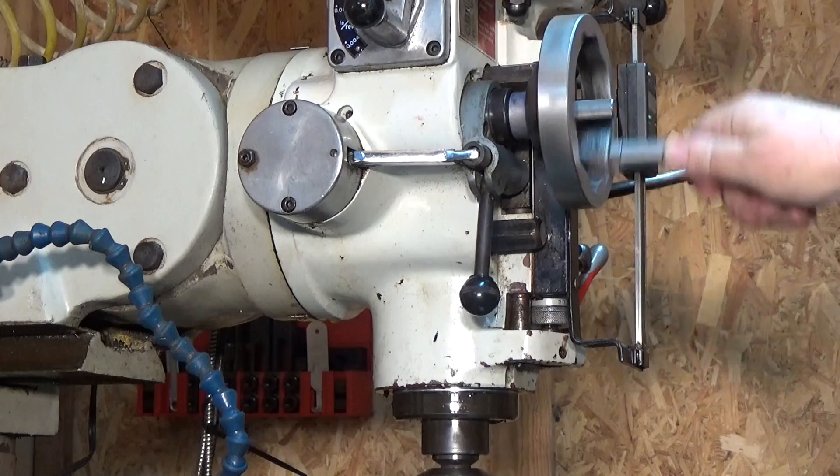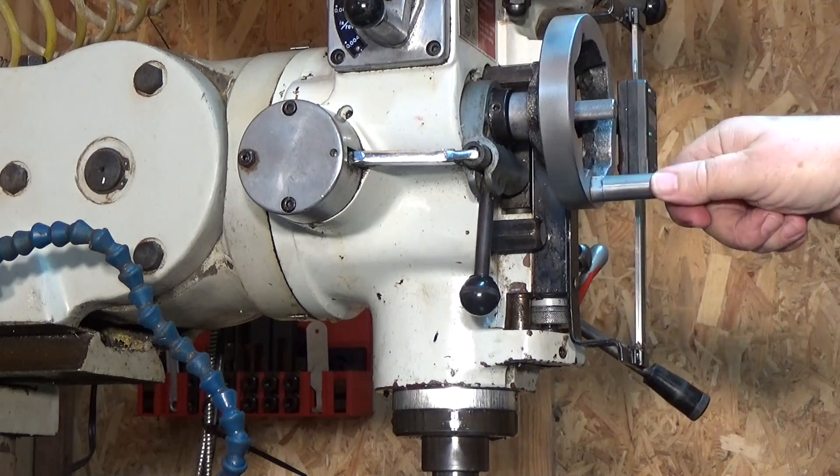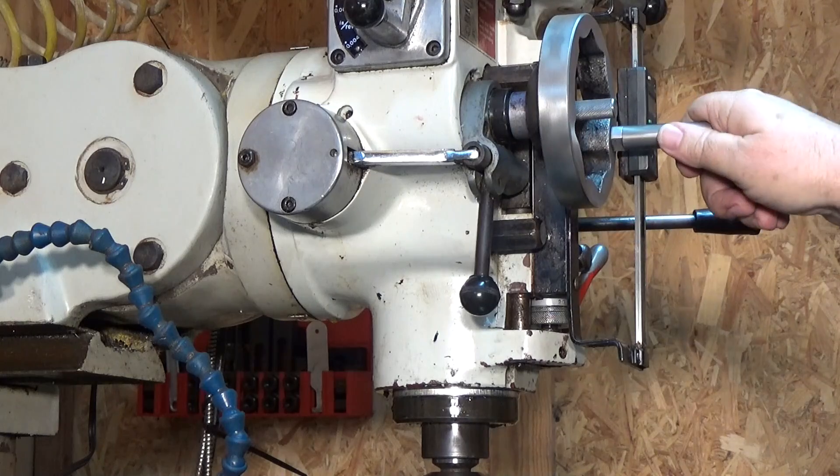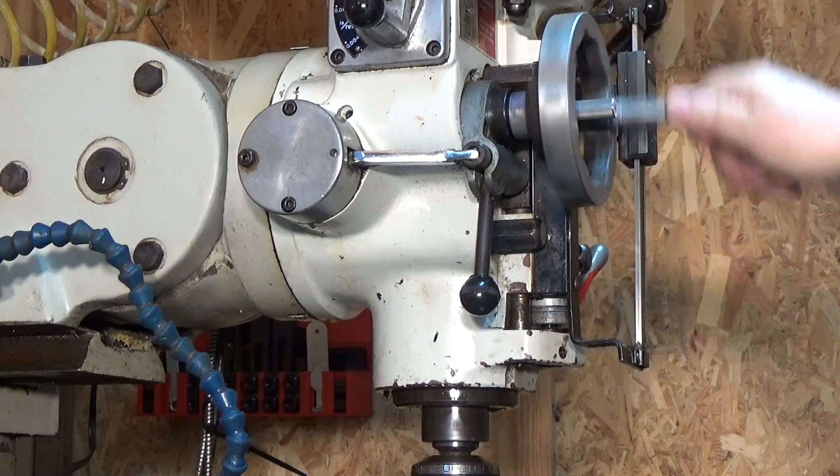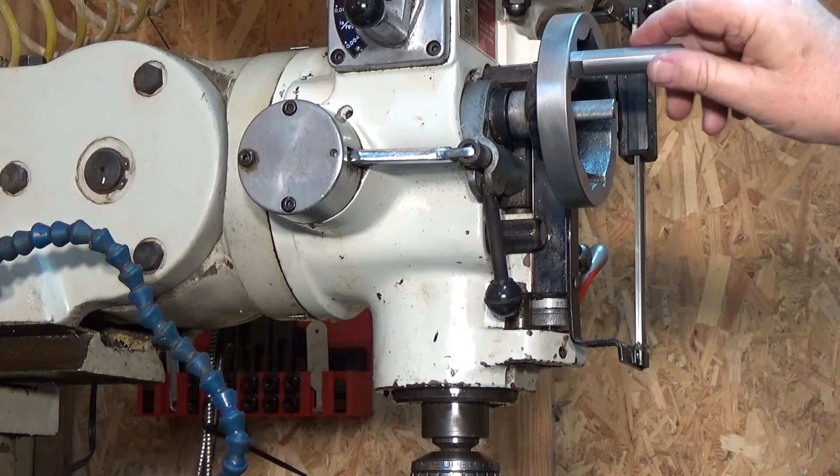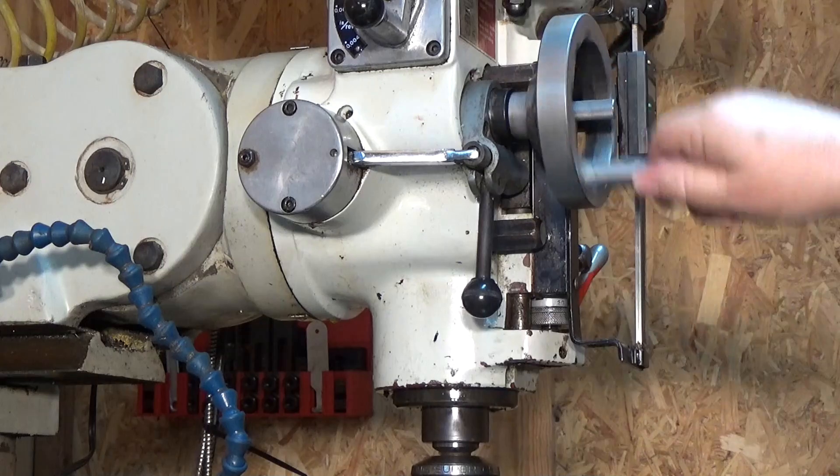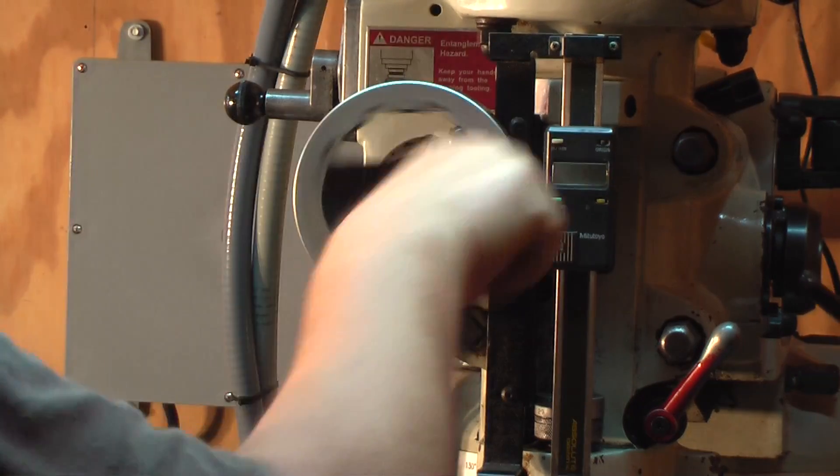Once that clutch engages, you got your fine feed. Simple as that. If you come all the way up, the clutch will actually kick out on its own. That's all there is to it. Simply pull out the clutch until it engages and you got your fine feed.